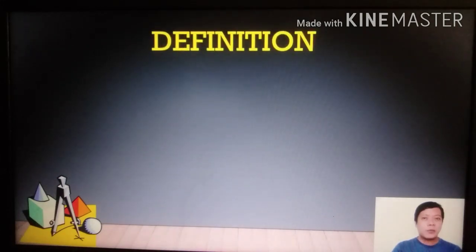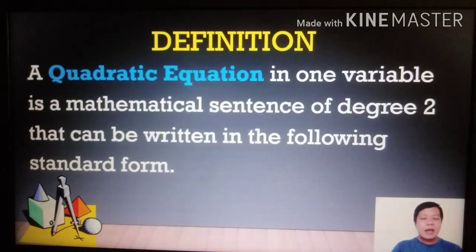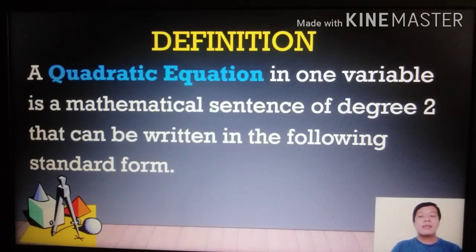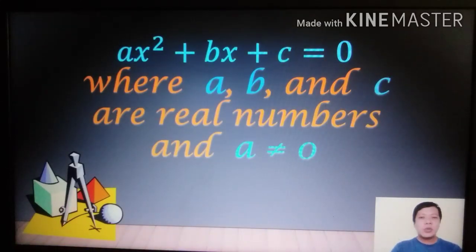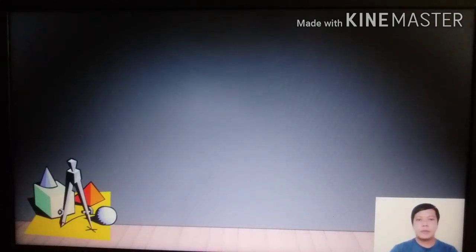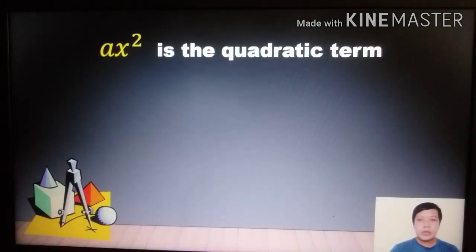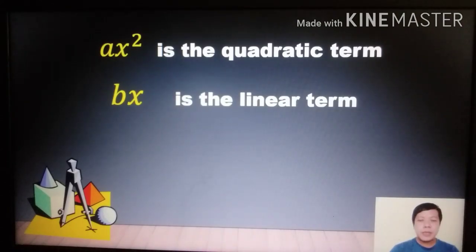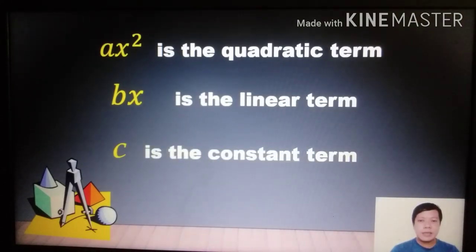First, let us learn the definition of a quadratic equation. A quadratic equation in one variable is a mathematical sentence of degree 2 that can be written in standard form: ax² + bx + c = 0, where a, b, and c are real numbers and a is not equal to 0. Here, ax² is the quadratic term, bx is the linear term, and c is the constant term.